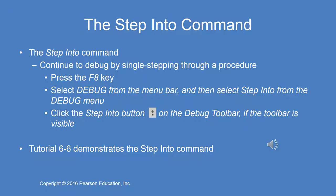I want to introduce the step into command. You can single-step through a procedure in this mode. You select Debug from the menu bar and then select Step Into from the debug menu, and you click the Step Into button if the toolbar is visible — it's not always visible. Step Into steps one line of code at a time into the procedure or function, and it shows you the local variables.